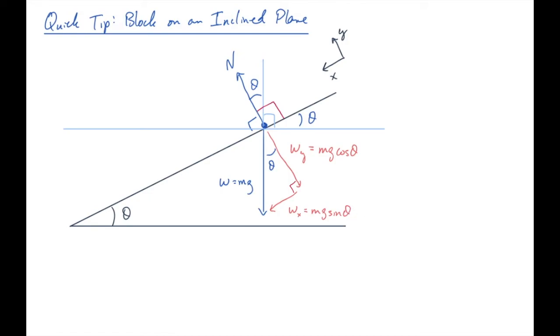Notice that when theta equals zero, when the inclined plane becomes a horizontal surface, the weight is fully in the y direction, and the x component goes away, as expected.